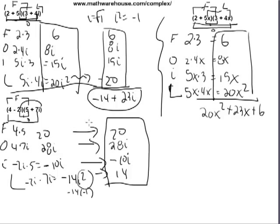So just like we did here, or even in your algebra 1 days, we're now going to just add up all these terms. 20 minus 14 is going to give us 6, plus 28i minus 10i is 14i.